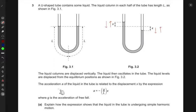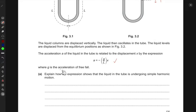The acceleration A of the liquid in the tube is related to the displacement X by this expression that you can see. They have given us the acceleration equation for the system. G is the acceleration of free fall, which is the acceleration due to gravity.